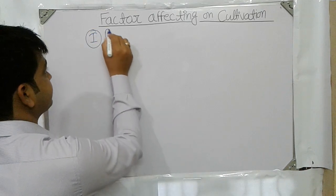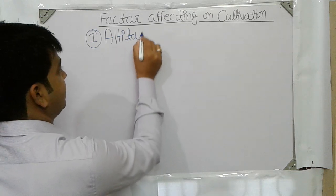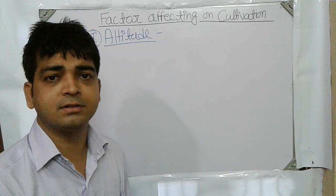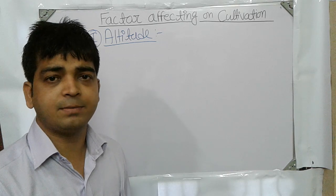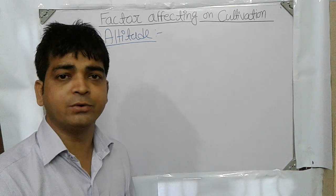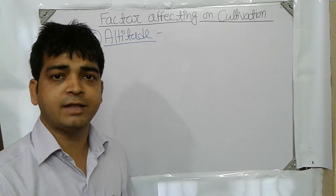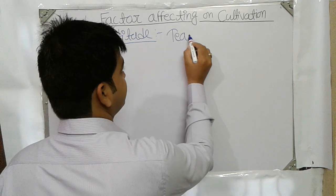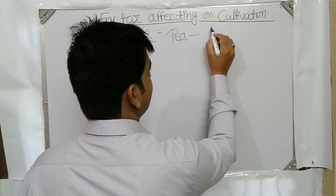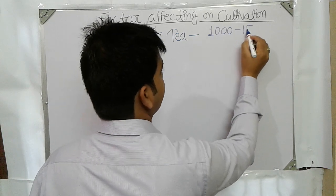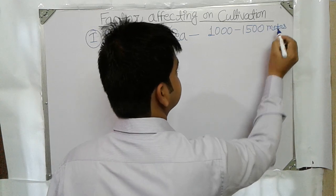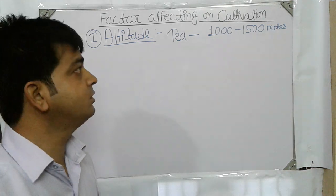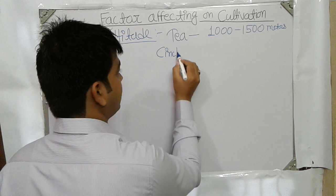The first factor is altitude. Altitude is nothing but the height from the sea level. Each and every medicinal plant has its own requirement — at which altitude it is going to grow and which altitude is suitable for that particular plant. For example, tea requires an altitude of 1000 to 1500 meters. Cinchona bark, used for the anti-malarial drug, requires 1000 to 2000 meters.